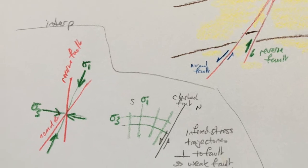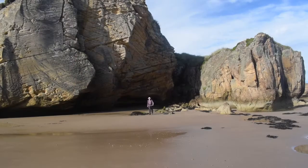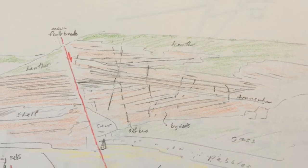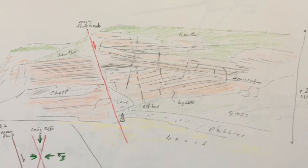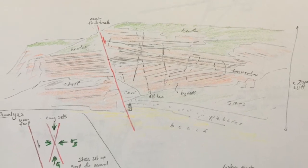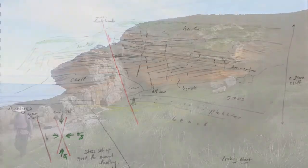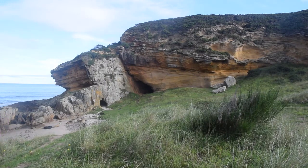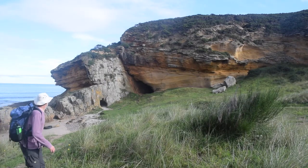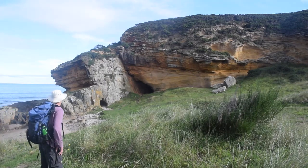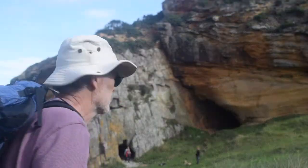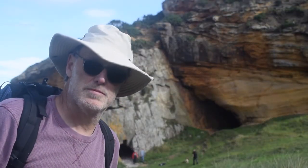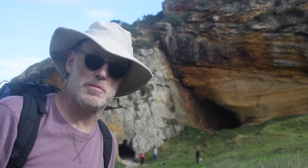Klashach Cove is a great place to examine faulting in porous sandstones and to relate the development of arrays of small faults that comprise a damage zone to the formation of a normal fault in a sedimentary basin. The Klashach Fault — popular today. It's a bit of a gem.